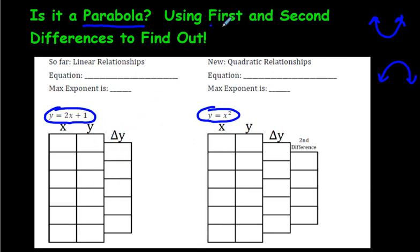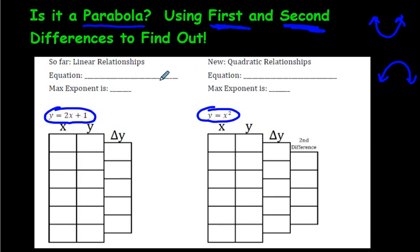First differences are what we're going to use to find out if it's a straight line, and the second difference is what we're going to use to find out if it's a parabola. Another word for parabola — the type of equation it would be — is called a quadratic. There's the word quadratic right there.